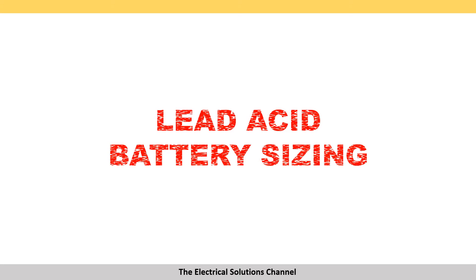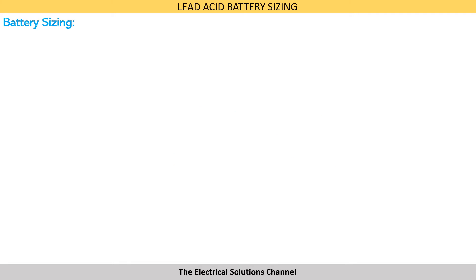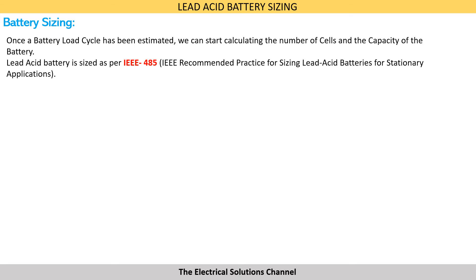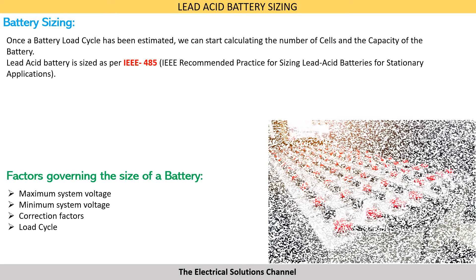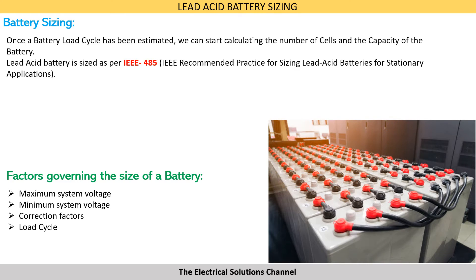Hey friends, welcome to my video on lead acid battery sizing. In my previous video I had explained how to estimate the battery load cycle - link to the video is given in the description. Once a battery load cycle has been estimated, we can start calculating the number of cells and the capacity of the battery. Lead acid battery is sized as per IEEE 485. The major factors governing the size of a battery are the maximum system voltage, the minimum system voltage, various correction factors, and most importantly, the battery load cycle.